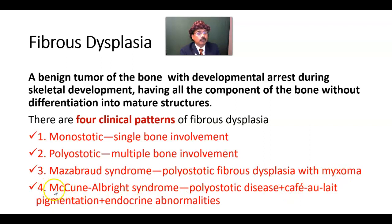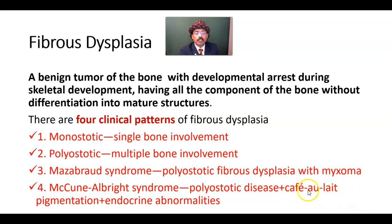The fourth clinical pattern is McCune-Albright syndrome. This is also a polyostotic fibrous dysplasia, plus we will have cafe-au-lait skin pigmentation. The margin of this pigmentation mark would be very much zig-zag or irregular. We will also get endocrine abnormalities: it may be a problem of the pituitary gland, adrenal adenoma, Cushing's syndrome, or hyperthyroidism.